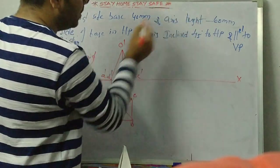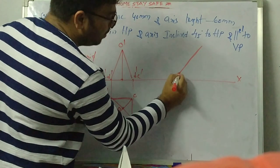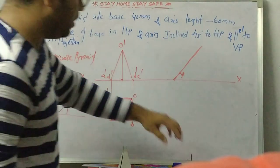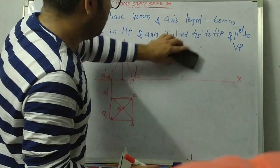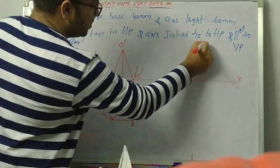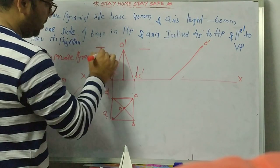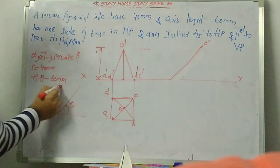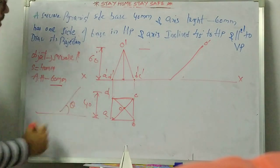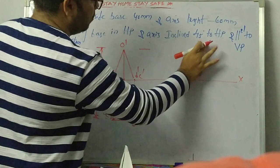If the axis is inclined 45 degrees to the HP, draw the axis line above the reference line at angle theta — that is, making a 45 degree angle. The axis length on the left side: the axis height is 60mm and the base side is 40mm. Measure this axis length and draw it here. Let this point be O'.